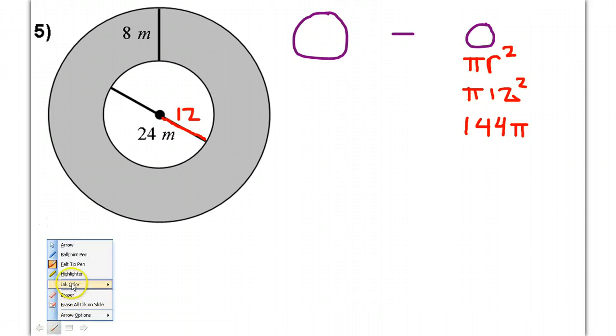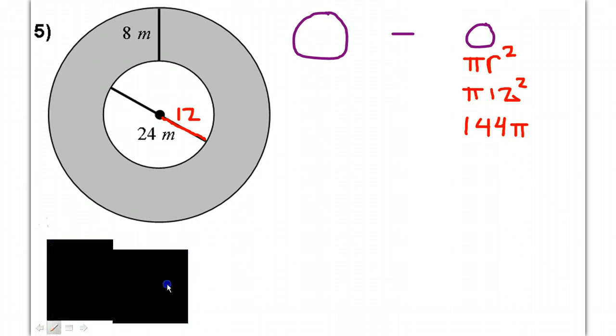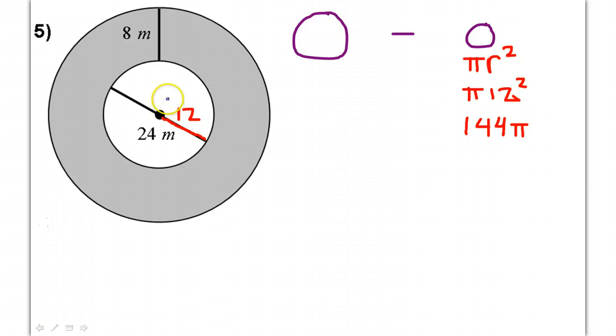Now let's do the area of the big circle. Well, of course the area is still pi r squared, so we just need the radius. Is it 24, is it 8? Well that's none of the above.